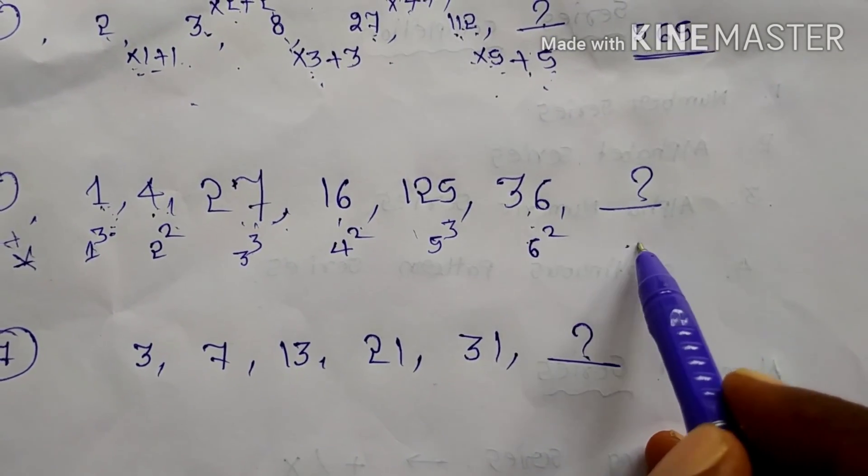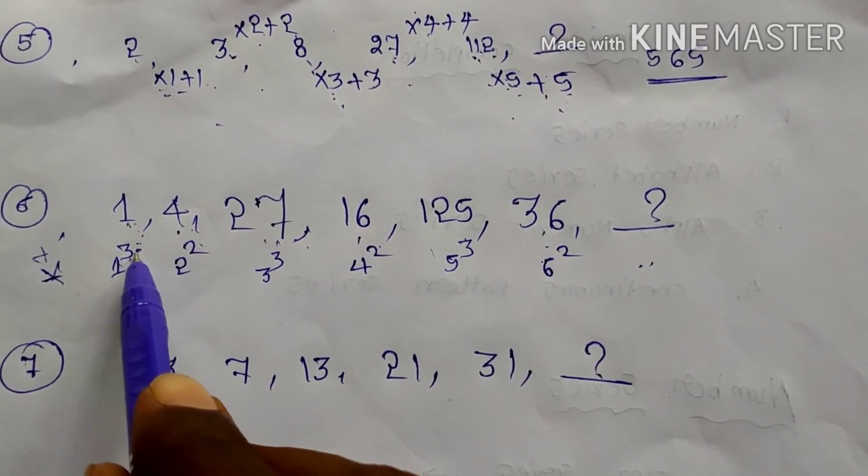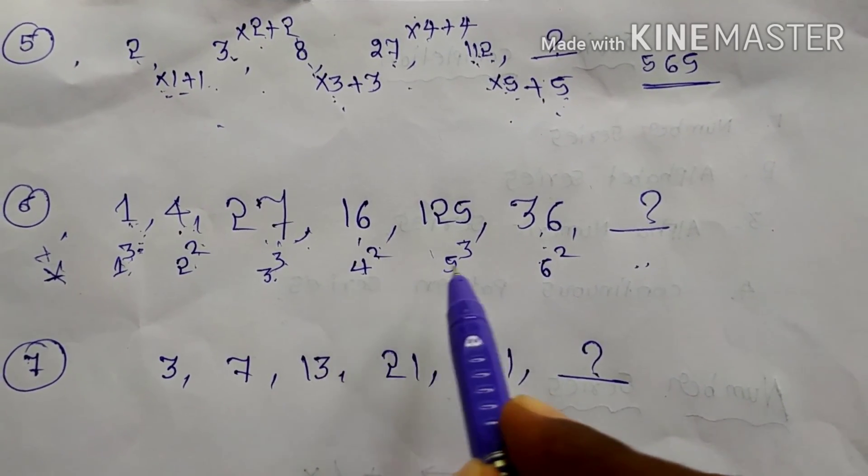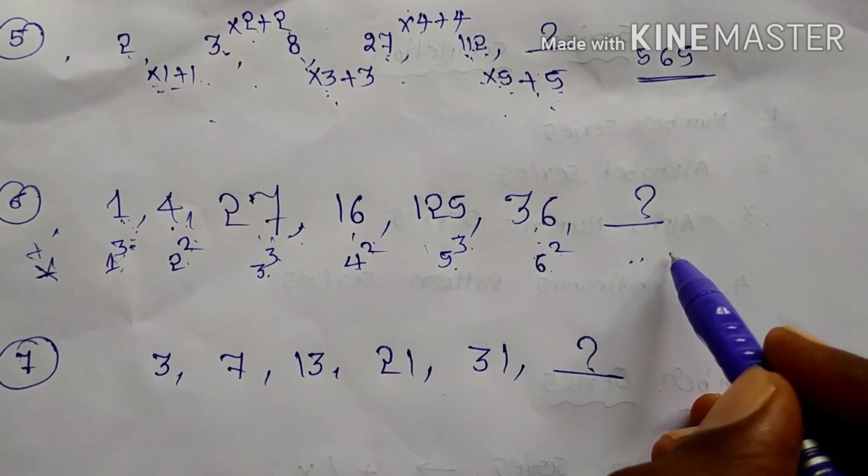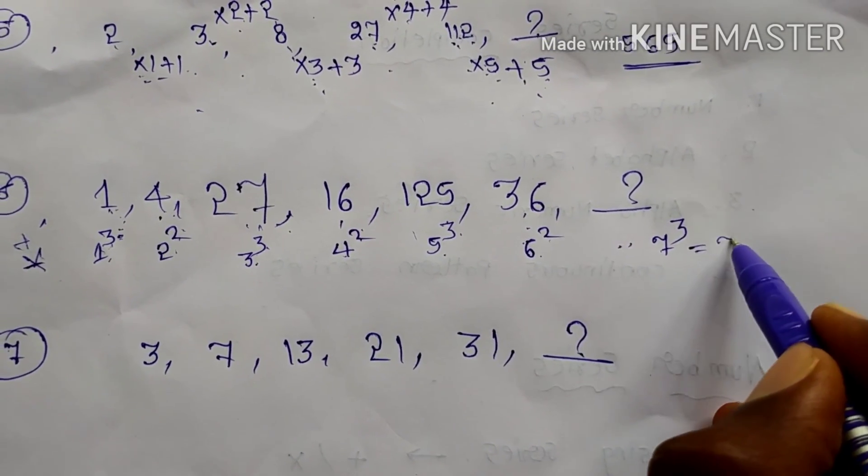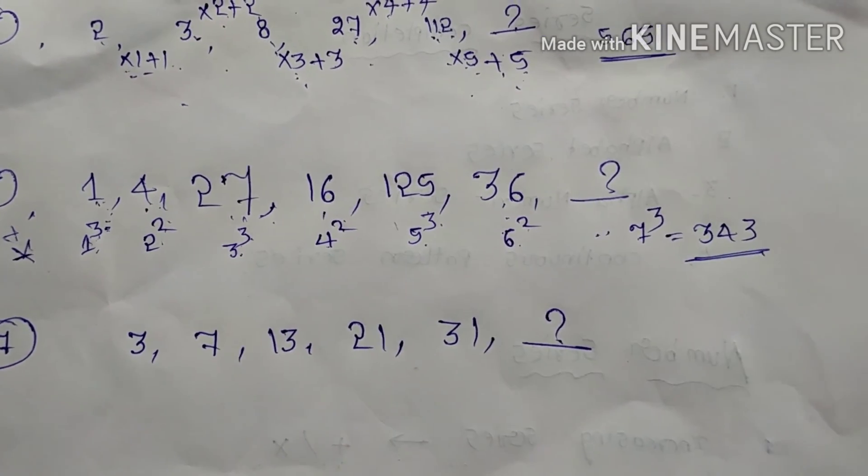1, 2, 3, 4, 5, 6. Next number will be 7. But can I write here 7 cube or 7 square? Once you can observe the pattern. You can write here 7 cube. 7 cube. 7, 7, 49. 49 into 7. You will get 343 is your answer.